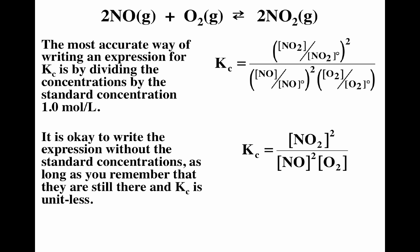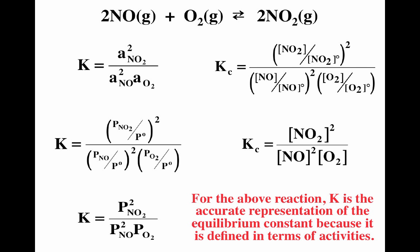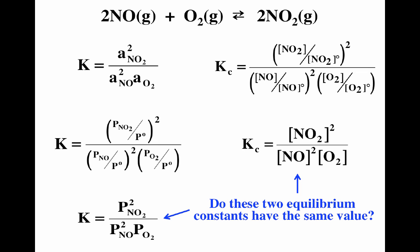K sub C means we're writing things in terms of concentrations. Often in textbooks you'll find K and K sub P — if they write K in terms of pressure they use K sub P. I use K if doing it properly in terms of activities, and K sub C if using concentrations. We can write in terms of concentrations as long as we remember that concentration is divided by one mole per liter, getting rid of units. So we have two equilibrium constants: K (the thermodynamic K) and K sub C (in terms of concentrations). The interesting question is: do these two have the same value?